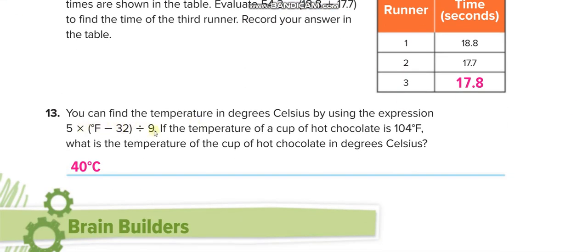Here they give you the temperature in Fahrenheit. If it is 104 degrees Fahrenheit, to convert it to Celsius, put 104 in place of the degree F in the expression, then minus 32, then multiply by 5, then divide by 9, and you will get the Celsius value.